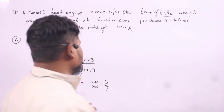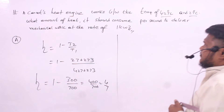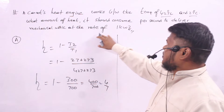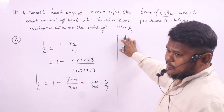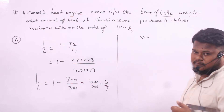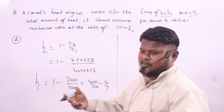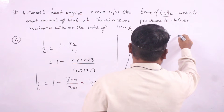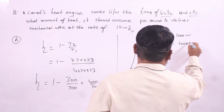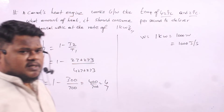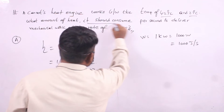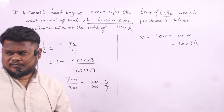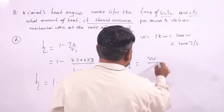The question asks: what amount of heat should the engine consume per second to deliver mechanical work at the rate of 1 kilowatt? Power delivered by the engine is work done, so work done is 1 kilowatt, or 1000 joules per second. Efficiency is defined as work done divided by Q1, the energy received from the source.